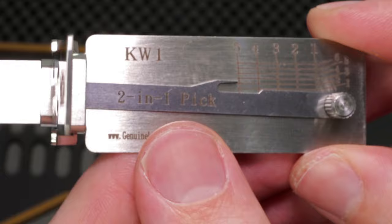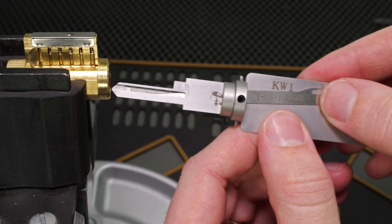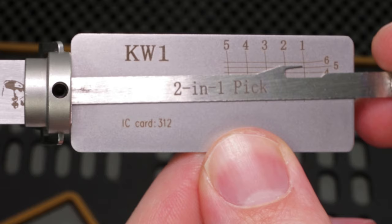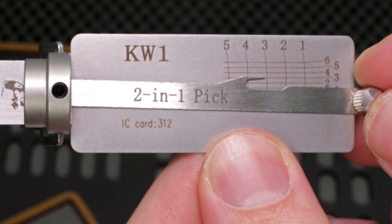But let's compare this code to what we get with the original KW1 Lishi, which is the more expensive brand name. So we're going to see, we're going to get a 4 again. We're going to get the 2. We're going to get a 3 again. 6. And a 1. So we're able to get the same code.